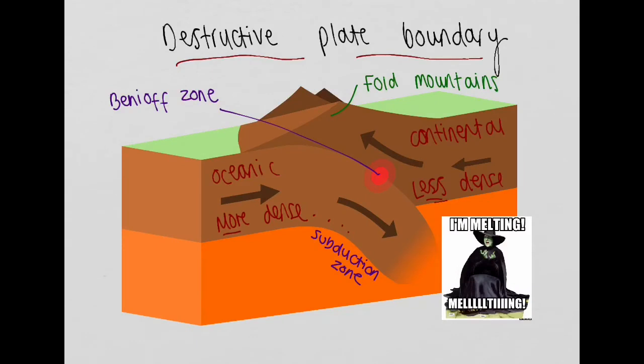First up is a destructive plate boundary. Destructive plate boundaries form where two plates are moving towards one another. Driven by convection currents in the mantle, the oceanic plate, which is more dense, moves towards the continental plate, which is less dense. The oceanic plate subducts or moves below the continental plate as it is more dense and heavier, forming what is called a subduction zone.